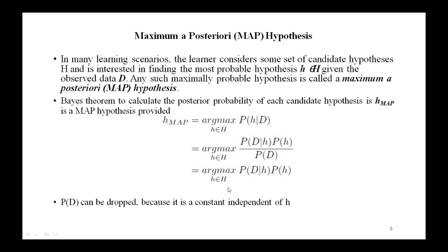In the final step we drop the term P(D) because it is a constant which is independent of H. So we get H_MAP = argmax P(D|H)·P(H), where small h belongs to the hypothesis space capital H.